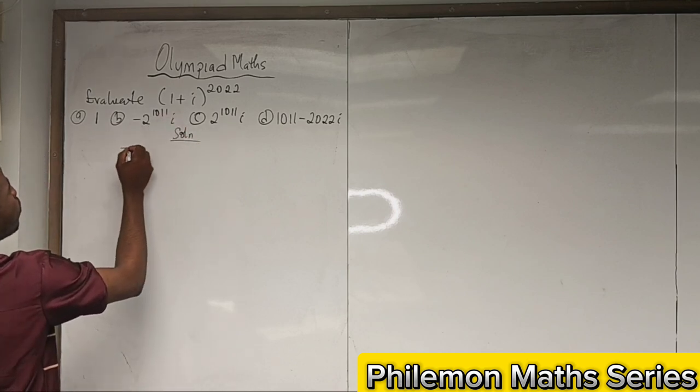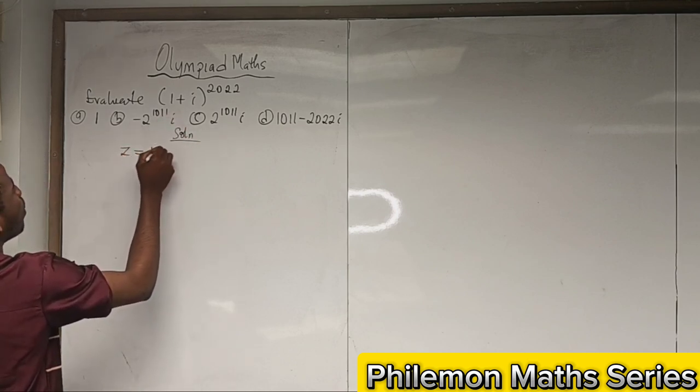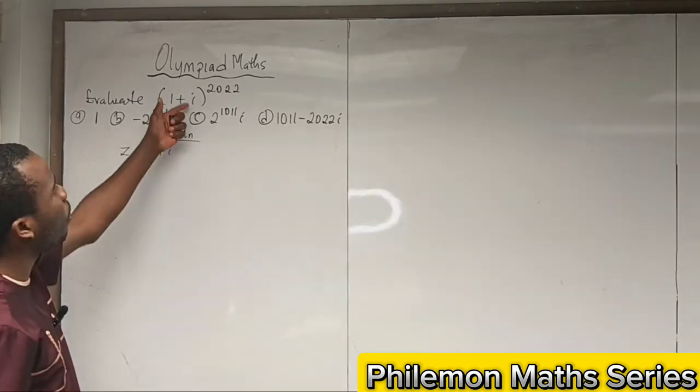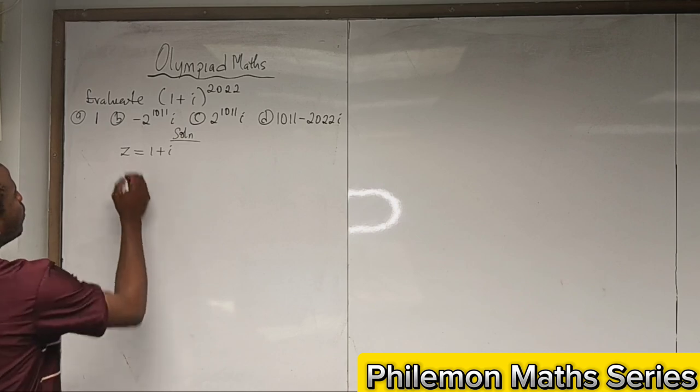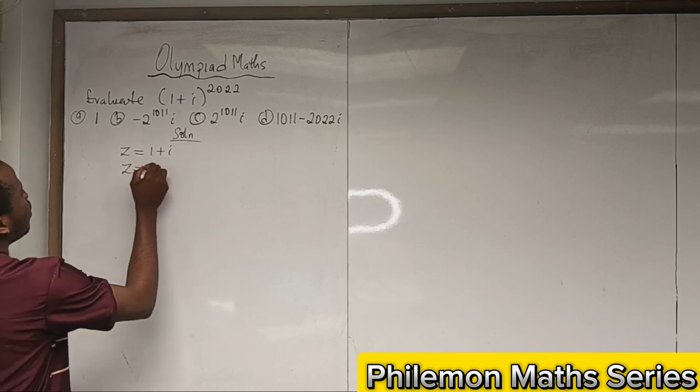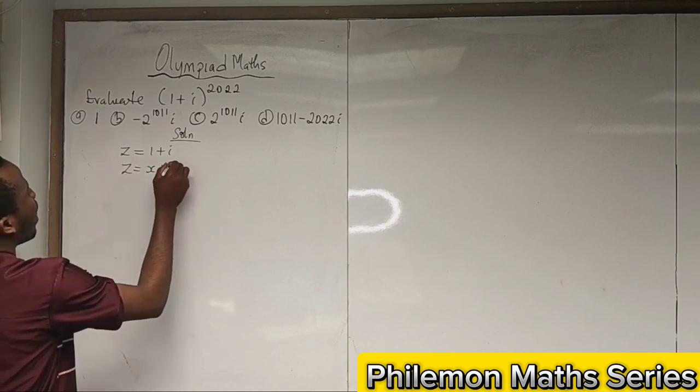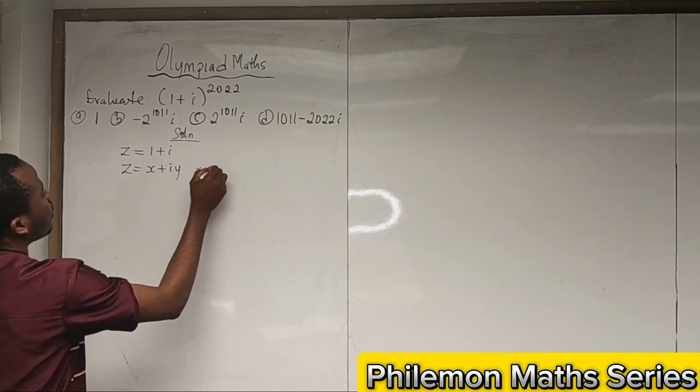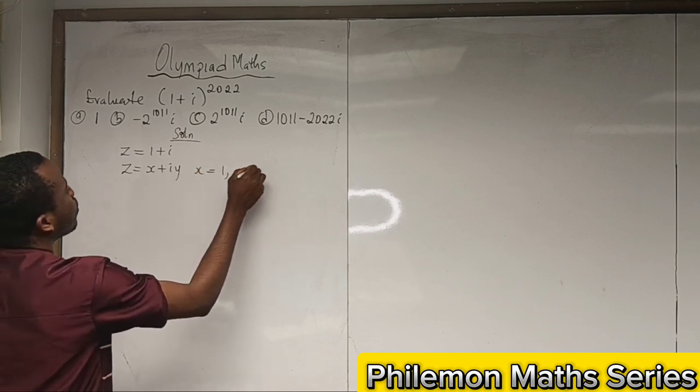Let's call 1 + i = z. I know since this is a complex number that z is written as x + iy, which means that x is equal to 1 and y is equal to 1.